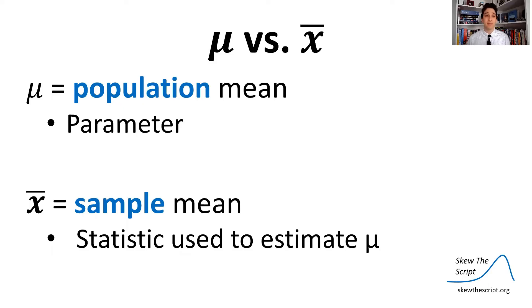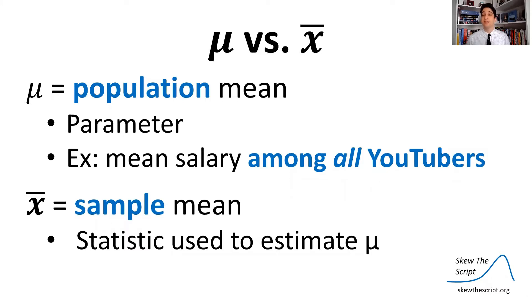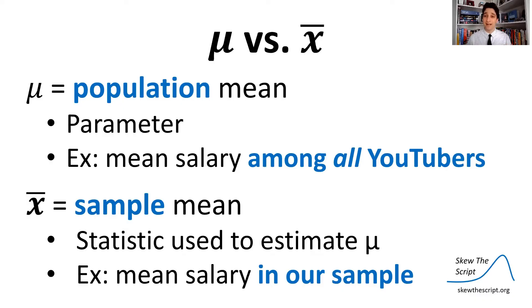So there's two types of means we could talk about. There's mu, the population mean, and there's X bar, the sample mean. So mu is the population mean salary among all YouTubers. X bar is among the sample. That's the mean salary in the sample that I got to try and estimate the population's mean.